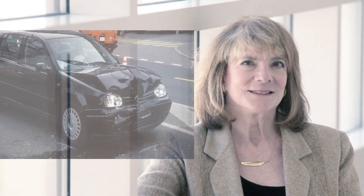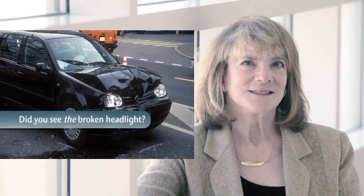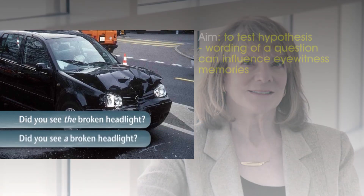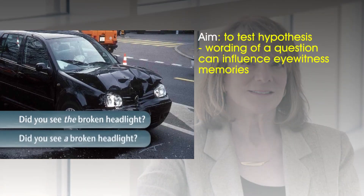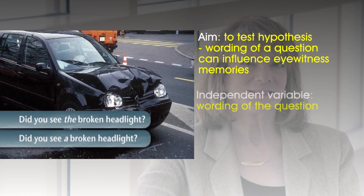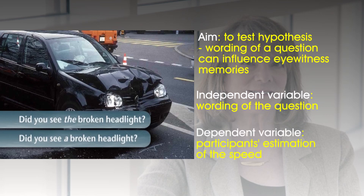In Loftus and Palmer's famous experiment, the aim was to test the hypothesis that the wording of a question can influence eyewitnesses' memories. The independent variable was the wording of the question, and the dependent variable was the participant's estimation of the speed.